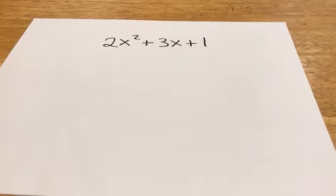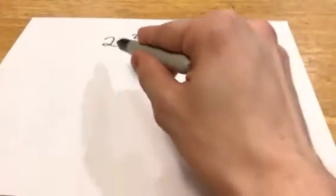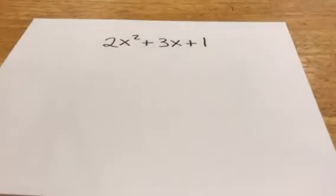What I wanted you guys to notice is that this number in front of the x squared is called the leading coefficient. Now it is not one so what I have to do is we have to do the rainbow method.